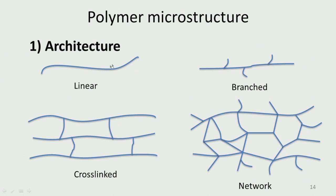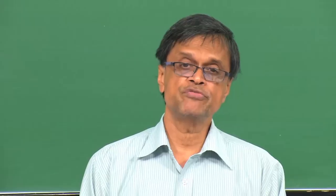Polymers can have different architectural structures: linear, branched (like LDPE with side chains giving low density), and cross-linked (cross-linking agents added to connect chains). Network polymers, dendrimers, and star polymers are also possible. All these structures have different melting points, phase transition temperatures, and mechanical properties — the architecture greatly affects physicochemical properties.